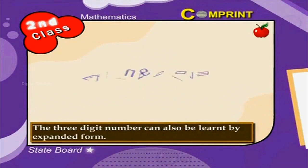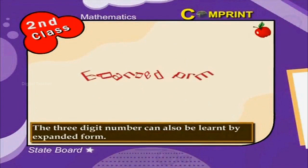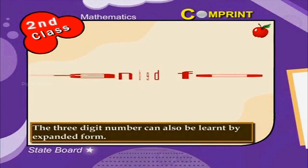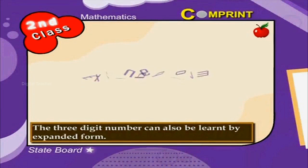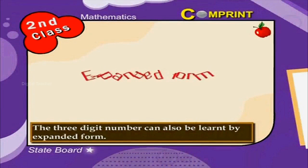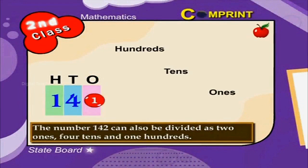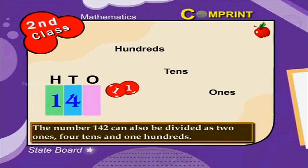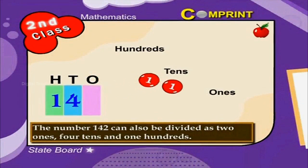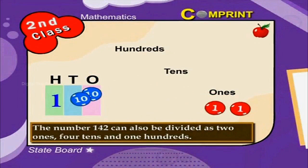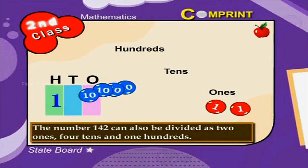A three-digit number can also be learned by expanded form. Look at the picture. The number 142 can be divided as 2 ones, 4 tens, and 1 hundred.